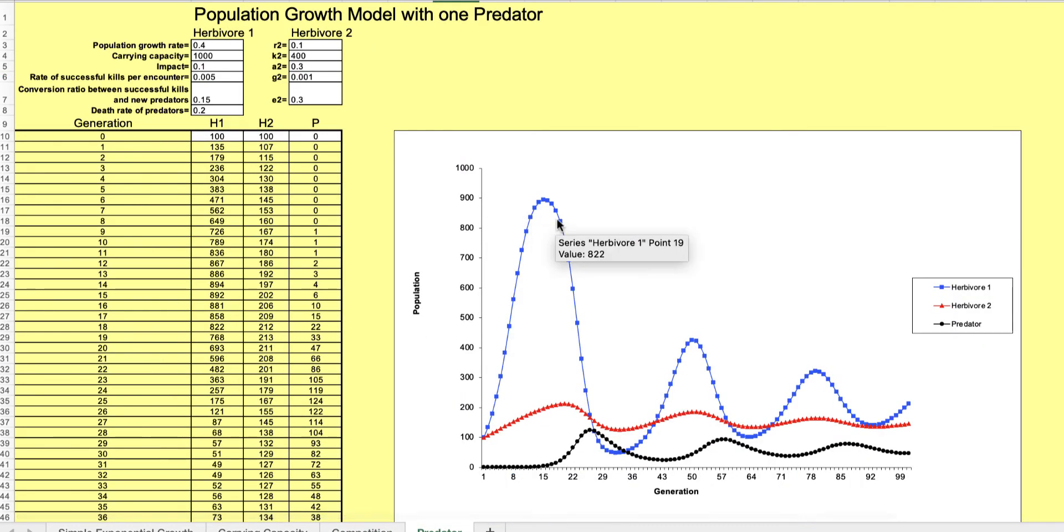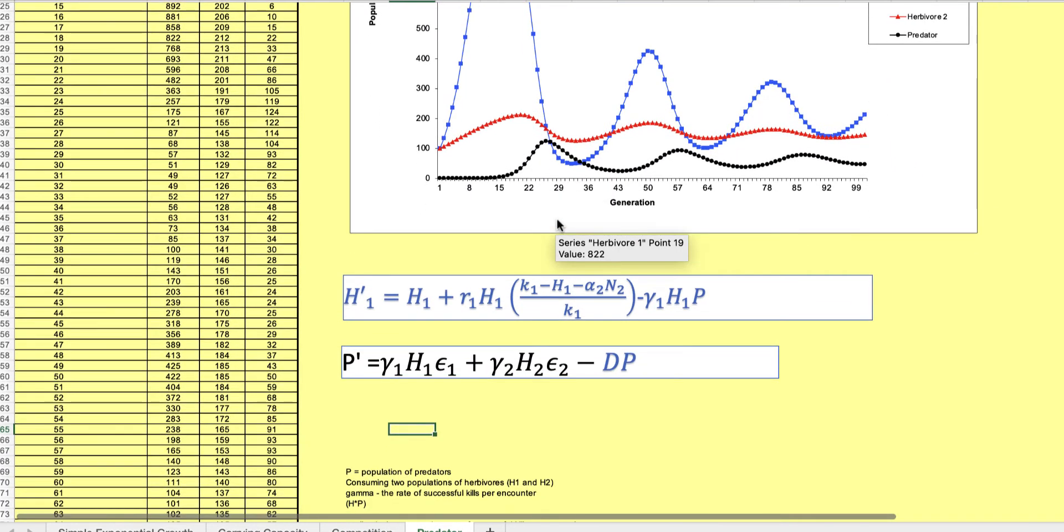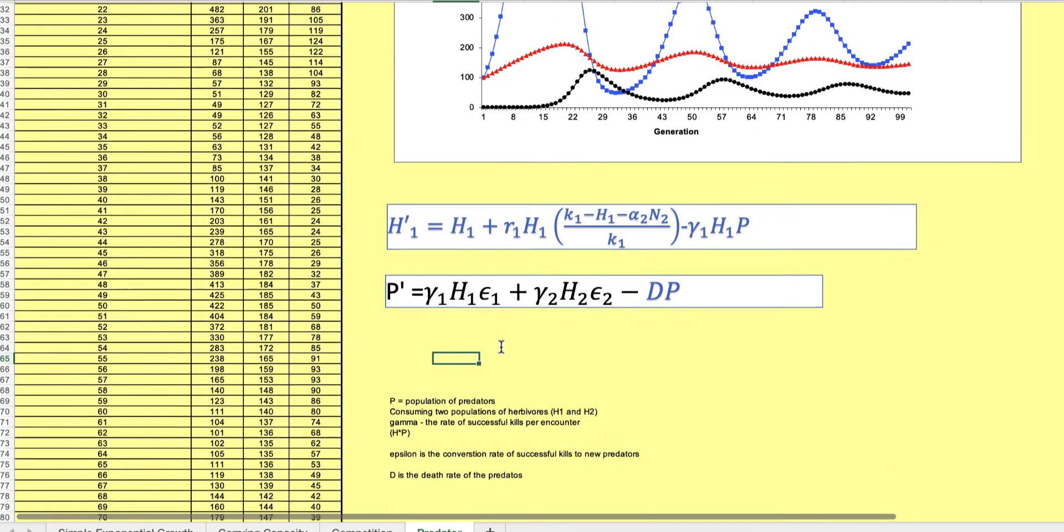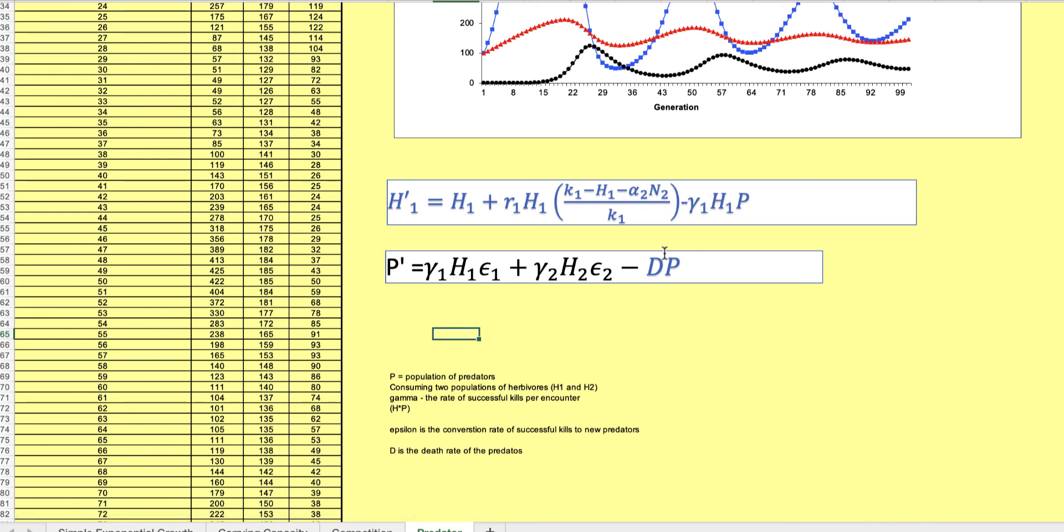If we have a predator that actually eats one of the other animals it becomes more complicated, and this is the model for that. You can read about more this here. There's this death rate of the predator. The only way that the predators die is by natural ways, they don't, they eat the prey.